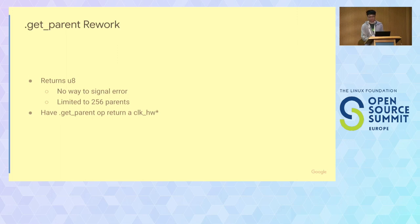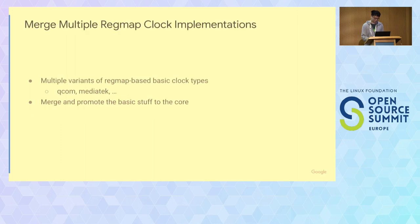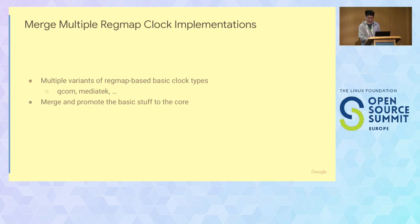A more realistic wishlist item: there currently are multiple regmap clock implementations — one for Qualcomm, one for MediaTek, and likely more. They're basically basic clock types like gates, dividers, multipliers, and muxes backed by a regmap. However, because of subtle platform differences, you end up with multiple implementations. We'd like to look at all these implementations, try to merge them, and promote them to the core so not everyone has to duplicate all the code.